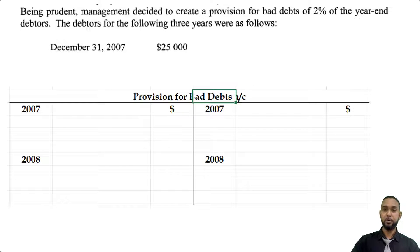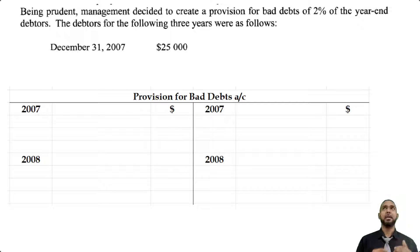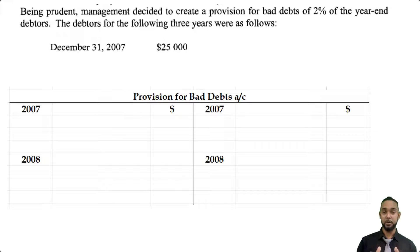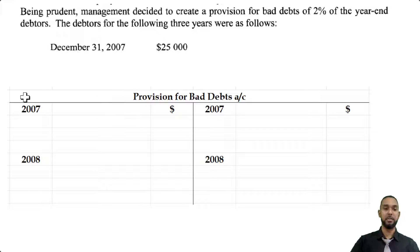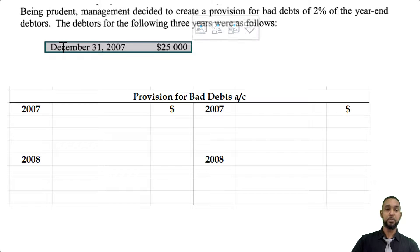The function of the provision for bad debts is to act as a decrease to the debtors balance in the balance sheet. Remember they said the company makes only credit sales. So it's quite possible that some percentage of debtors is not going to pay us, but we don't know exactly who. So what we do is we say we're going to cater for the unknown — we're going to be prudent. That's exercise of caution in the face of uncertainty. So we say about 2% of debtors we estimate will not pay us back, so the true value of our receivables will be the gross value minus that 2%.